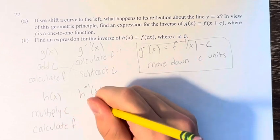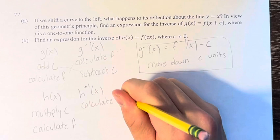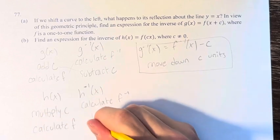So, again, we have to swap it and make it its opposite. So, we calculate f inverse, and then multiplying becomes dividing by c.